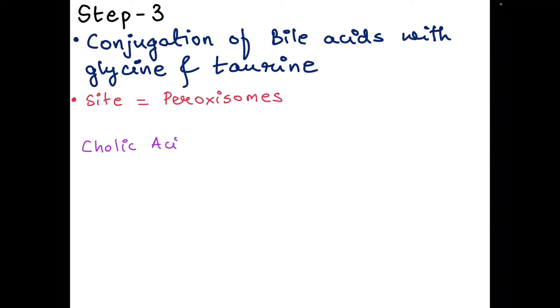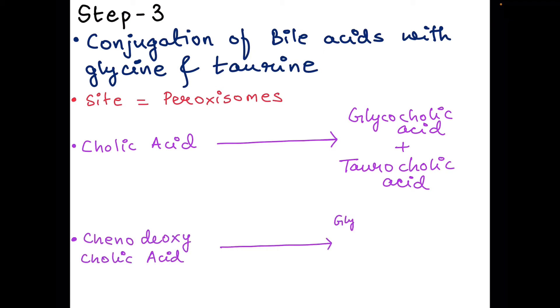Cholic acid when conjugated with glycine forms glycocholic acid, and with taurine it forms taurocholic acid. Similarly, chenodeoxycholic acid with glycine forms glycochenodeoxycholic acid - that's a very long name - and with taurine it forms taurochenodeoxycholic acid.